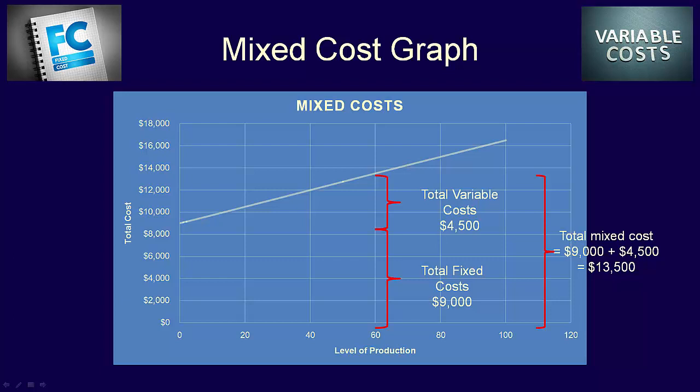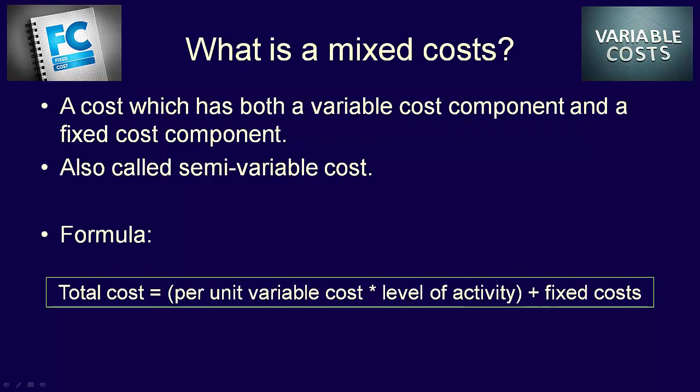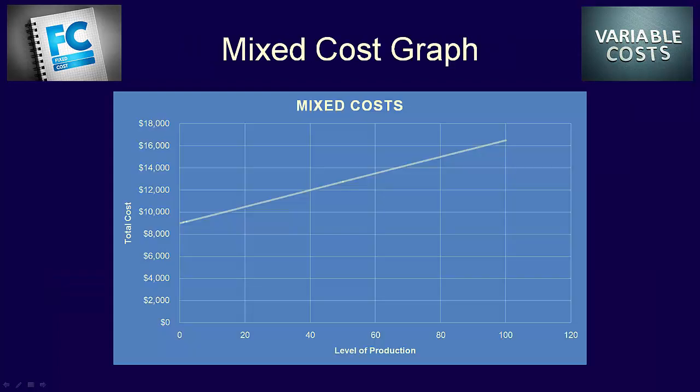That's a mixed cost. To recap: a mixed cost, sometimes called a semi-variable cost, is a cost which has both a variable cost component and a fixed cost component. The formula is total mixed costs equals variable cost per unit multiplied by the level of activity plus fixed costs. The graph of a mixed cost shows a line which intercepts the y-axis at the total fixed costs.